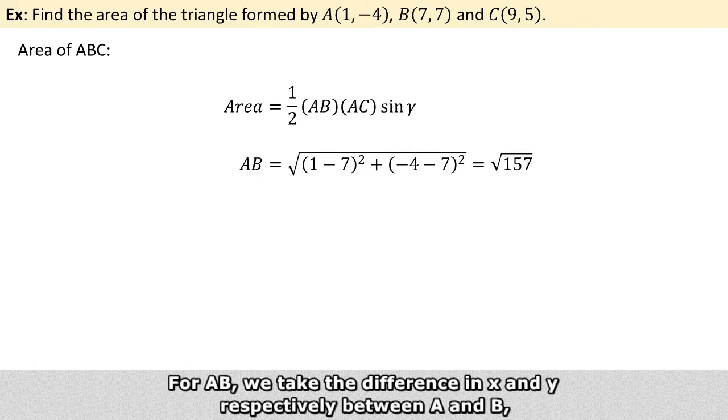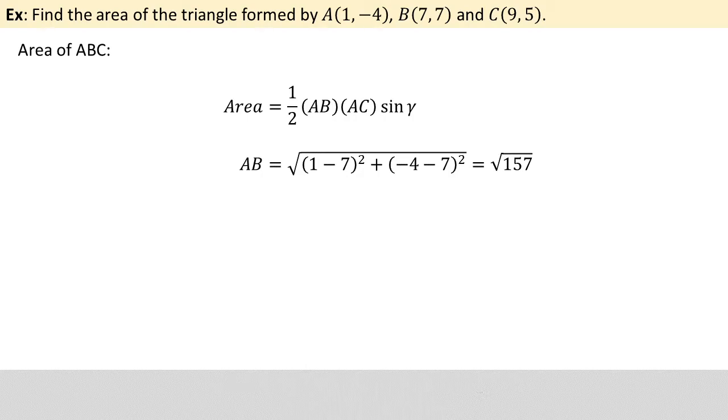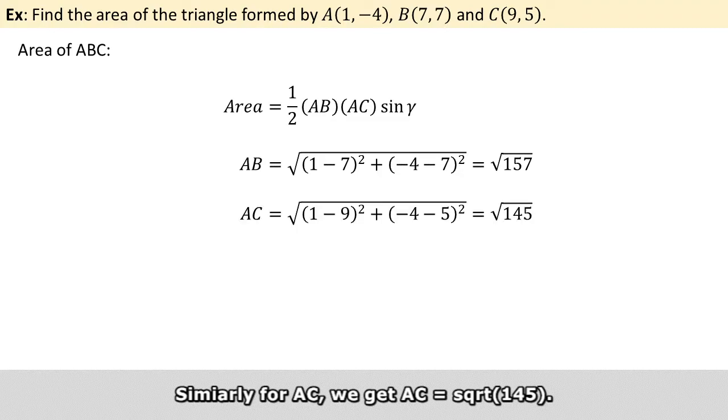For AB, we just take the square of the difference in x and y respectively between point A and point B. We add them up and take the square root of the sum. This will give square root of 157. Similarly for AC, we get square root of 145.